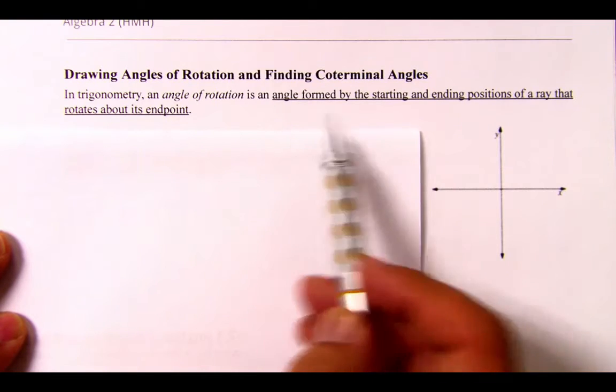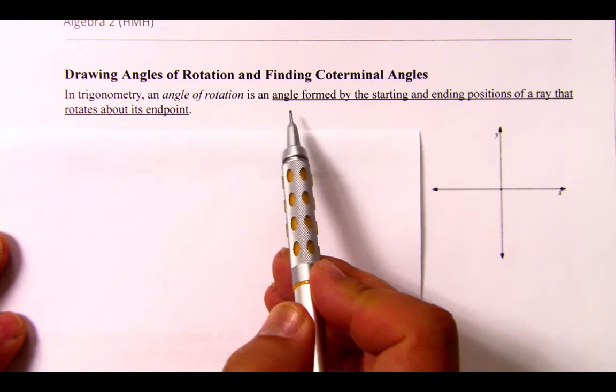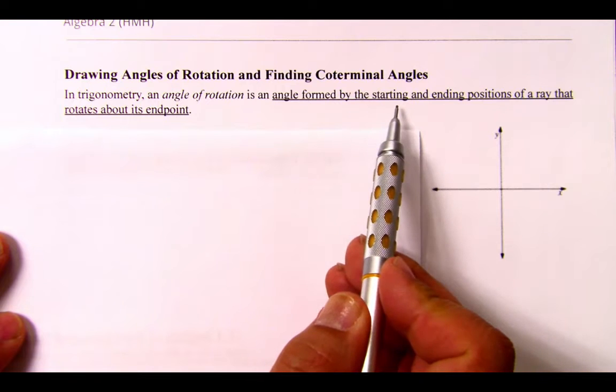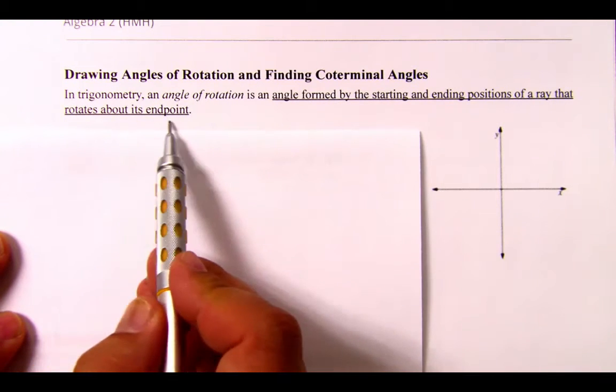The underlying portion is the one that you should copy down. In trigonometry, the angle of rotation is an angle formed by the starting and ending position of a ray that rotates about its endpoint.